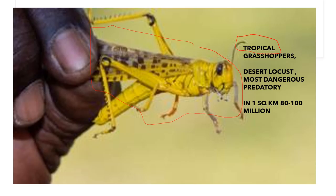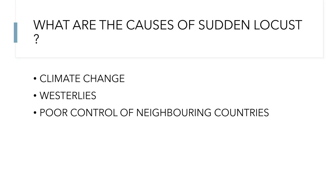In just one square kilometer covered with locusts there are about 80 to 100 million of them. There are Hollywood movies made about locust attacks, and there are plenty of videos shared on Instagram and Twitter about locust swarms in Jaipur — just Google it and you'll know how serious the problem is.